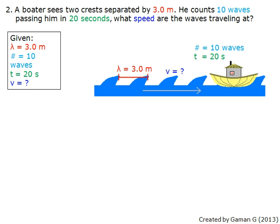Our second question: a boater sees two crests separated by 3 meters. He counts 10 waves passing him in 20 seconds. What speed are the waves traveling at? This time, the measurement with units of meters is the distance between crests and must be the wavelength.